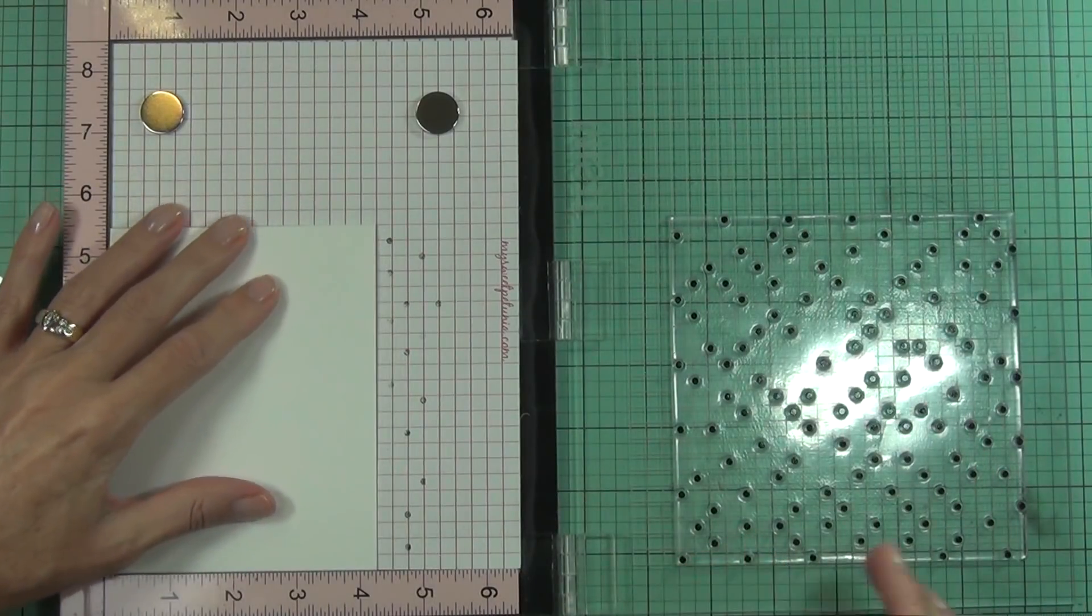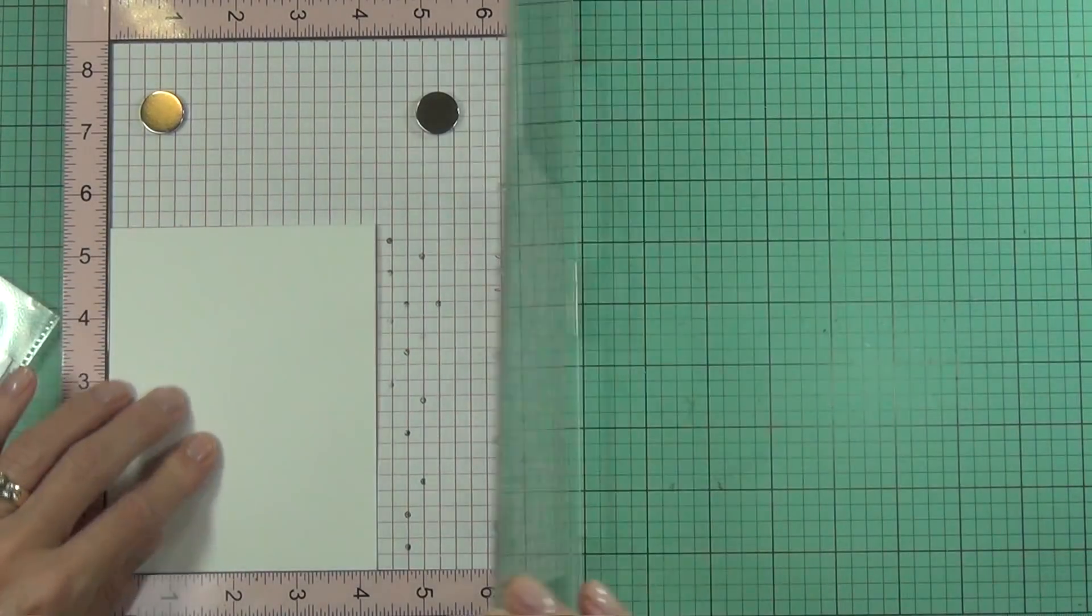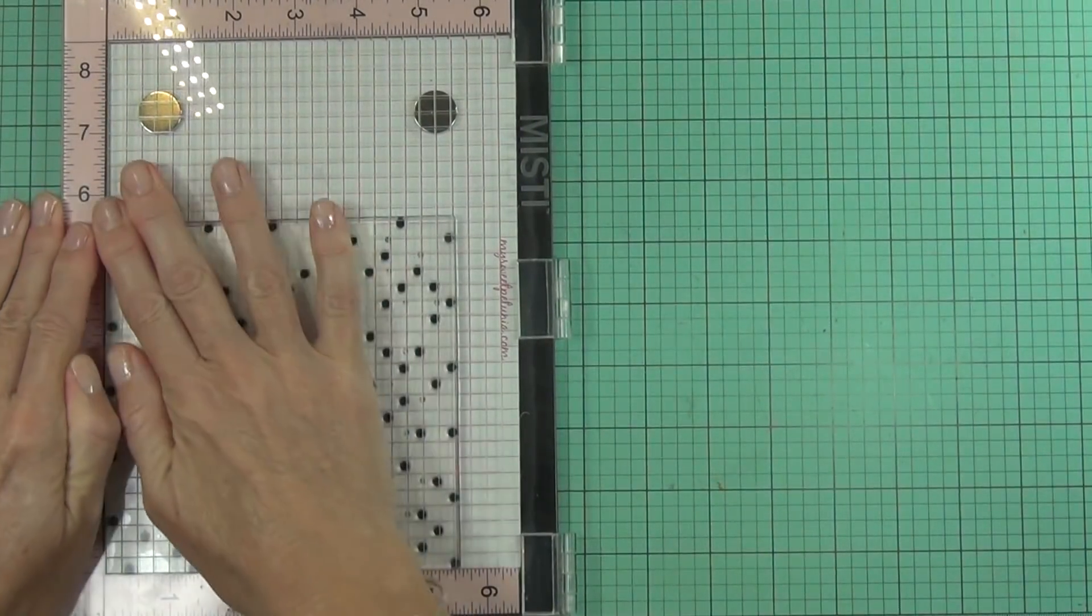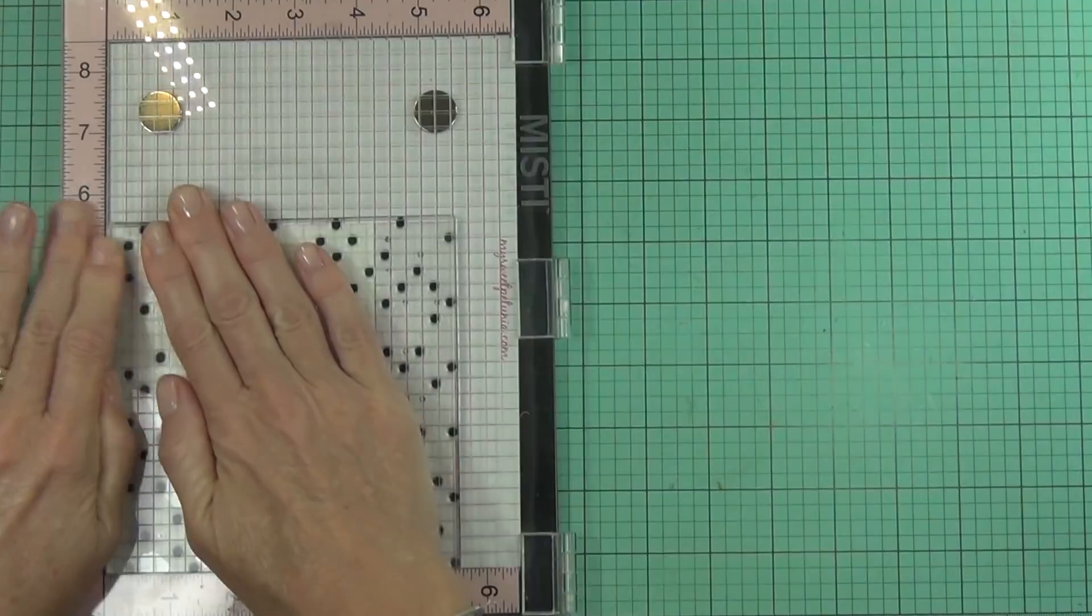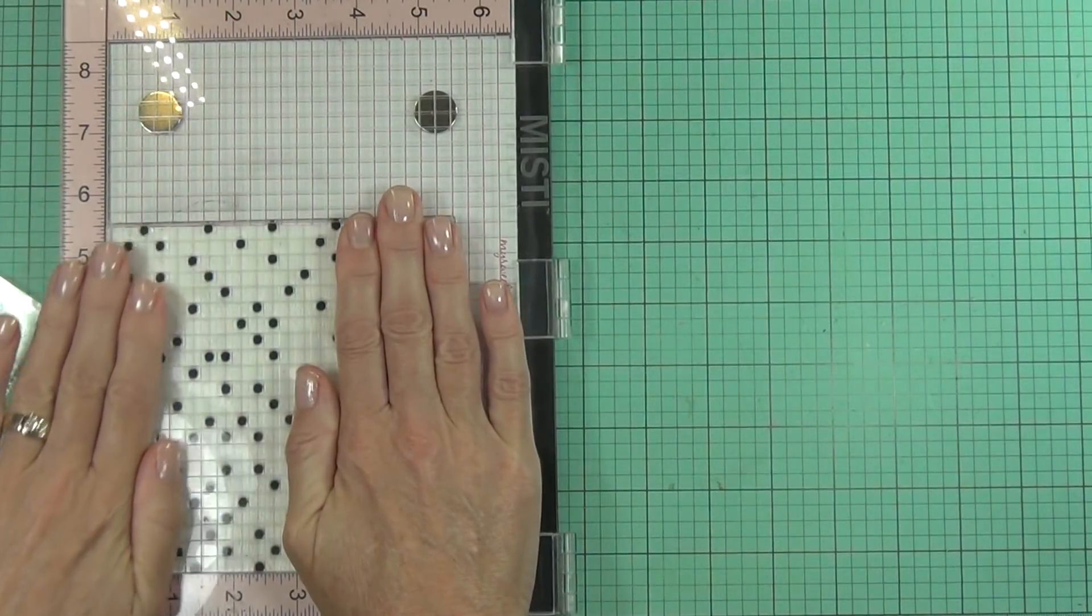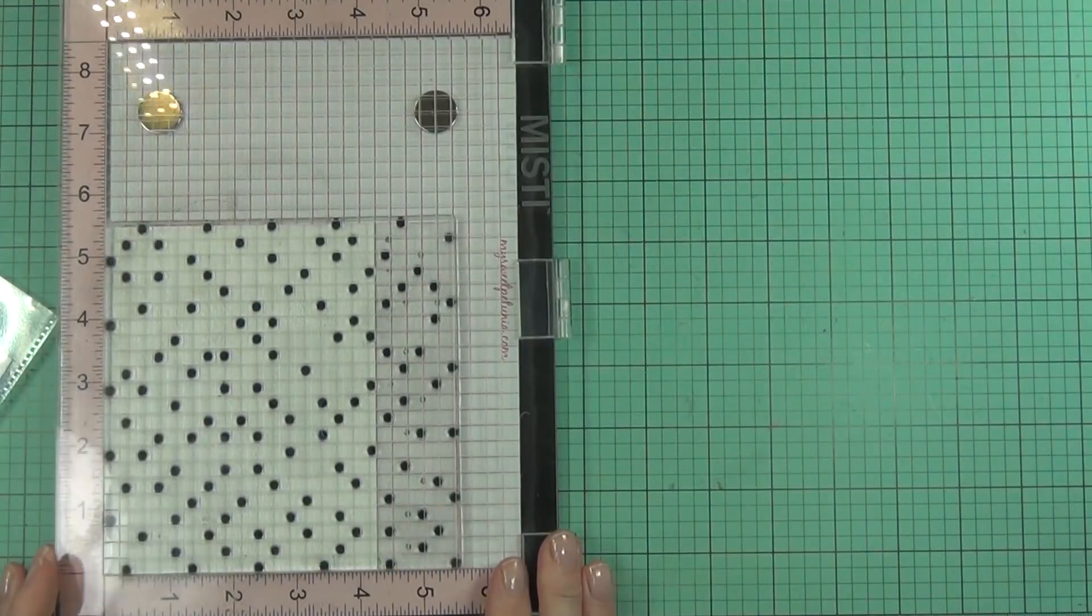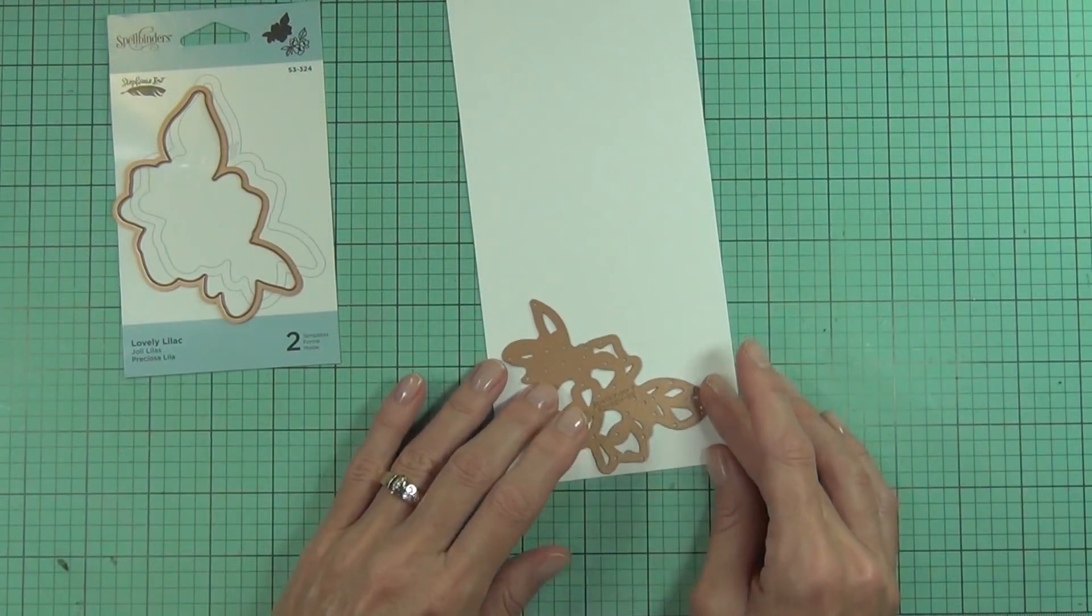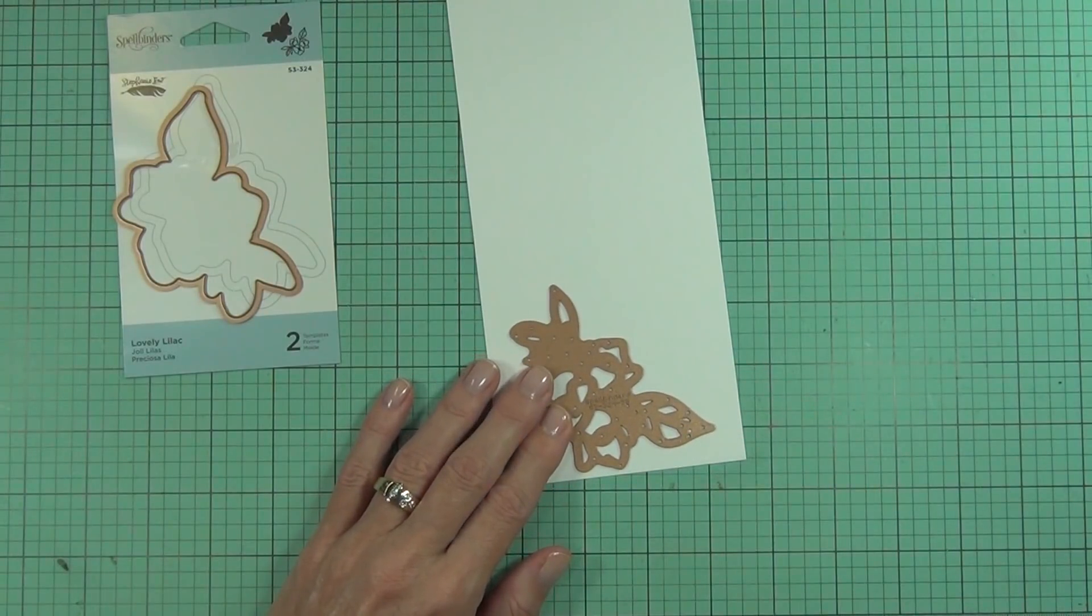I've decided to stamp a polka dot background. This is actually a turnabout stamp from Concord & 9th and I'm stamping it directly on some 110-pound Neenah cardstock. I've made this into a card base already, it's a top fold card, and I've used my Onyx Black ink to do that.